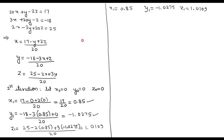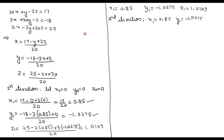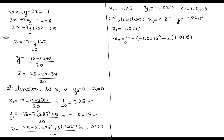For the second iteration, we use x₁ = 0.85, y₁ = −1.0275, z₁ = 1.0109. Substituting y = −1.0275 and z = 1.0109 into the expression for x: x₂ = (17 − (−1.0275) + 2×1.0109) / 20 = 1.0025.